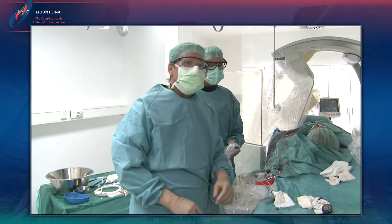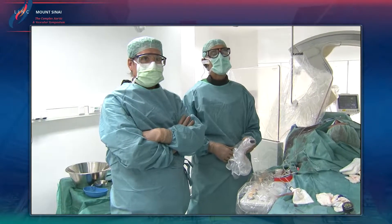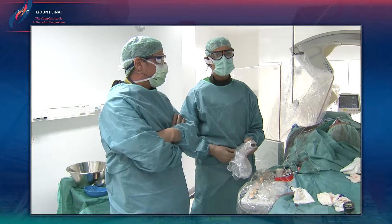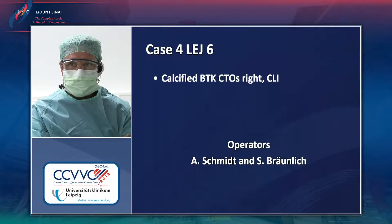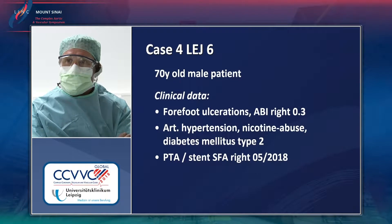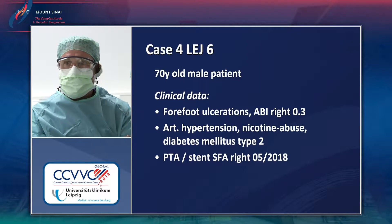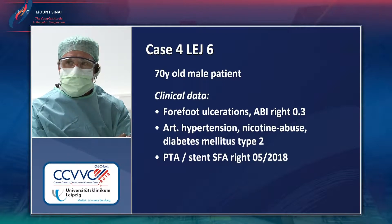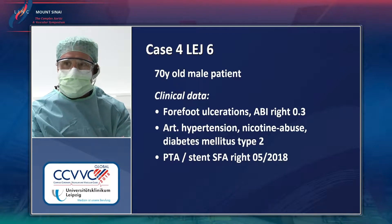We are here with our second case. This is a 70-year-old male patient with CLI and ulcerations on his forefoot. ABI is low at only 0.3. He has typical risk factors and has already had treatment of the inflow with stenting of the SFA on the right side in May of this year.